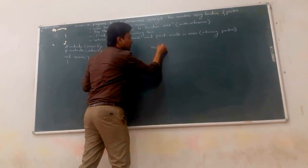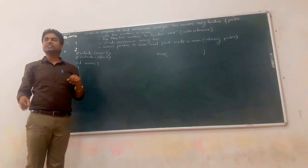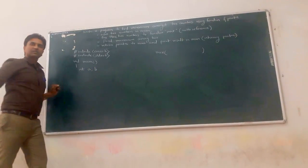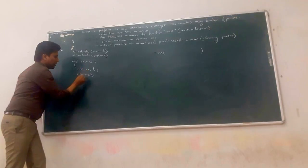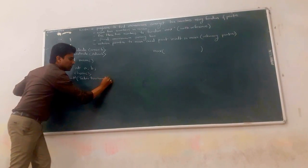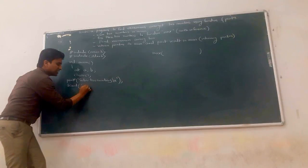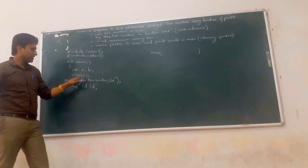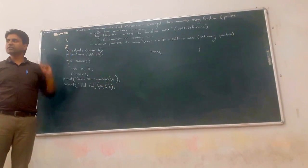Max is the name of the function. We pass two numbers because in the main function we scan only two numbers. In the main function we take variables A and B. Print 'Enter two numbers', then scan with scanf using percentage D and percentage D, with ampersand A and ampersand B. So we scan two numbers in our main function.